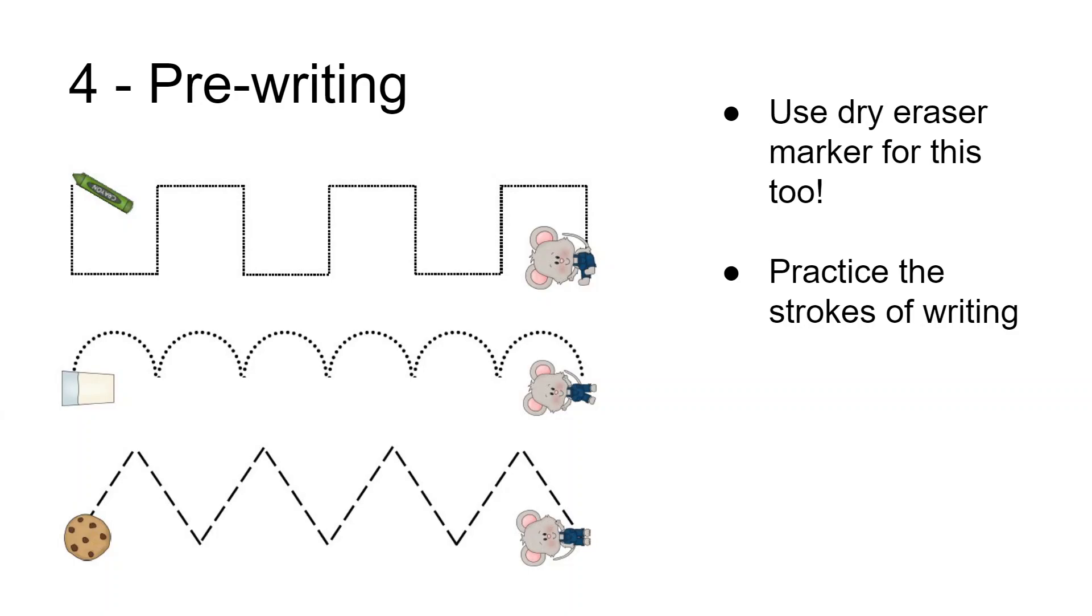The next strokes are those round strokes that are needed for O's and P's and B's, and the last stroke is a zig-zag stroke used in our letters like A or X. As this is a sheet-protected sheet, you want to use your dry eraser marker on it, and then you can wipe it off so you can use it over and over again.